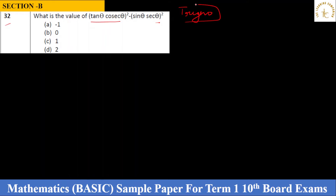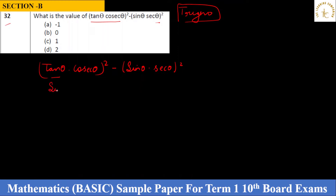Question 32: What is the value of tan θ × cosec²θ − sin θ × sec²θ? This is a trigonometry question but quite basic. We expand using fundamental identities: tan θ = sin θ / cos θ, cosec θ = 1/sin θ, and sec θ = 1/cos θ. Substituting, we get sin θ/cos θ × 1/sin²θ − sin θ × 1/cos²θ, which simplifies to 1/cos²θ × 1/sin θ − sin²θ/cos²θ. The sin²θ terms cancel.